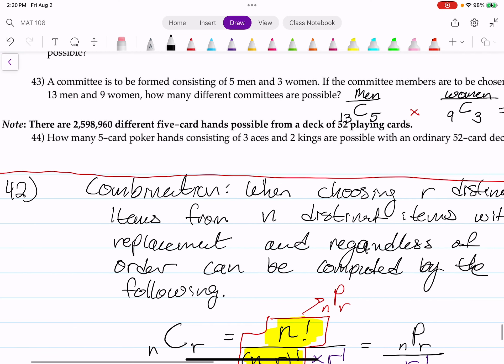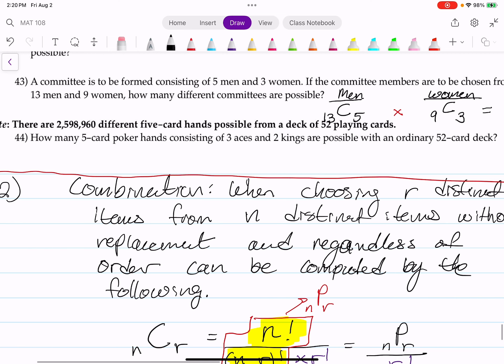Okay, so that gives a note. There are 2,598,960 different 5-card hands possible from a deck of 52 playing cards. How many 5-card poker hands consist of 3 aces and 2 kings that are possible within an ordinary 52-card deck? So the 52 cards in the deck, each card is distinct. Yes, there are 4 aces, there are 4 kings, but each ace and each king is different from each other. They're different by suit and by color. There are 2 red kings, there are 2 black kings, there are 2 red aces, there are 2 black aces. But within the subgroup of red, they're distinct by their suit: the ace of hearts, the ace of diamonds, then you have the ace of spades and the ace of clubs.